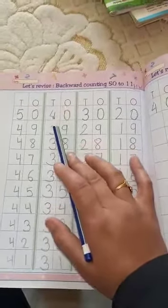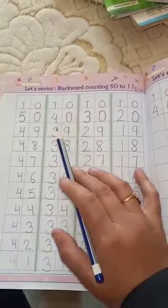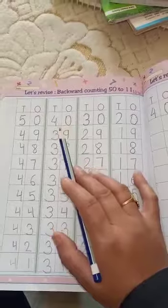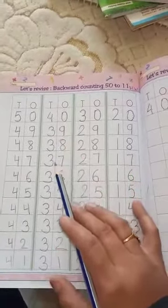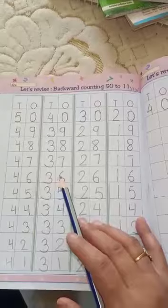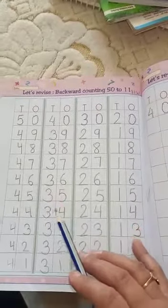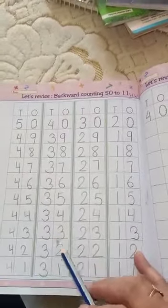So next line. Tens ones. 4, 0, 40. What comes after 40? 39, 38, 37, 36, 35, 34, 33, 32, 31.